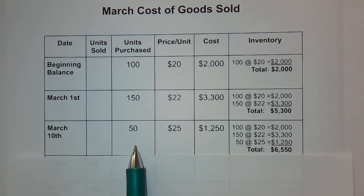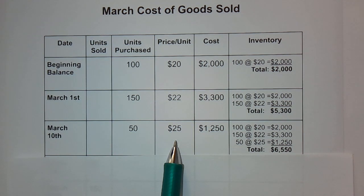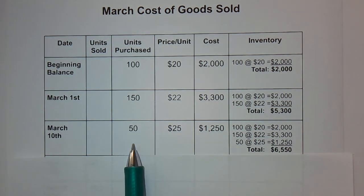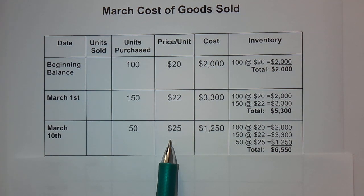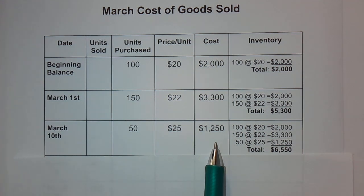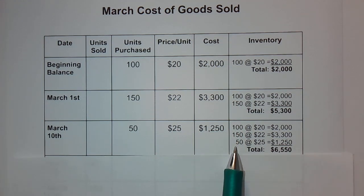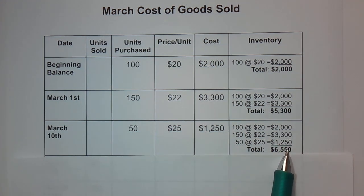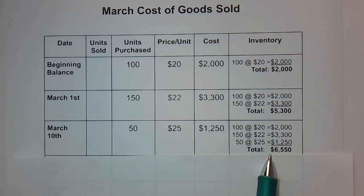On March 10th, an additional 50 units are purchased. The price has gone up further — we're all familiar with inflation right now — so only 50 units were purchased. At $25 per unit, 50 units cost $1,250. We add that to our existing inventory, bringing our total inventory cost to $6,550.